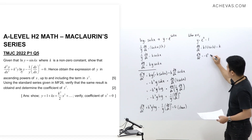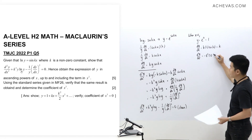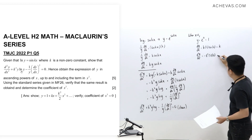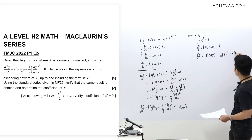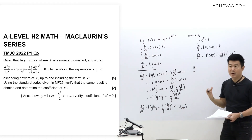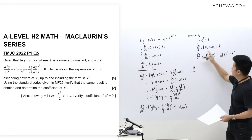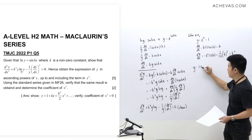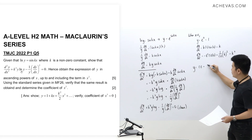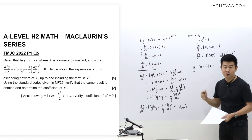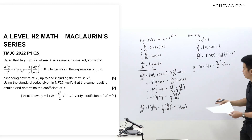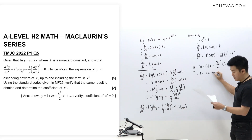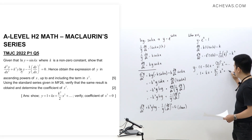Using the Maclaurin's formula y = f(0) + f'(0)·x + f''(0)/2!·x² + …, we substitute our values: f(0) = 1, f'(0) = k, f''(0) = k². So y = 1 + kx + (k²/2!)·x² + … = 1 + kx + (k²/2)·x² + …